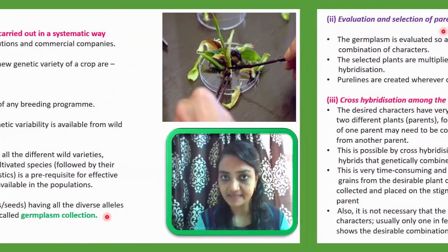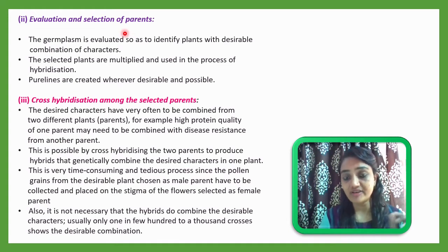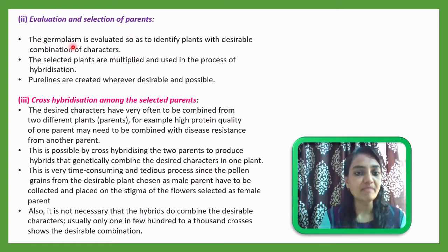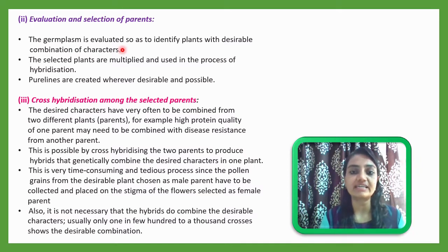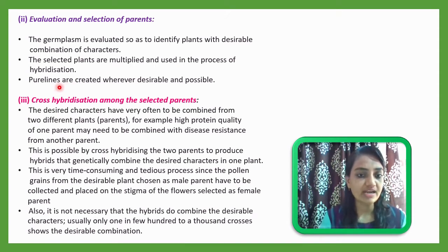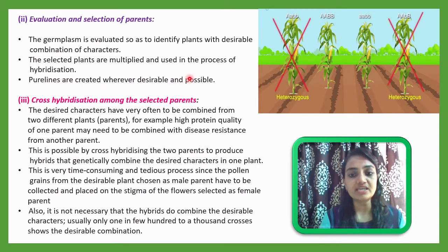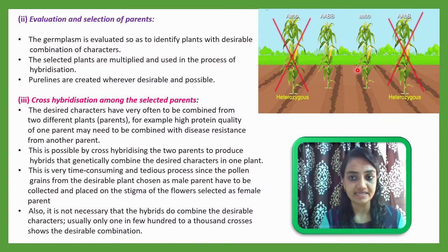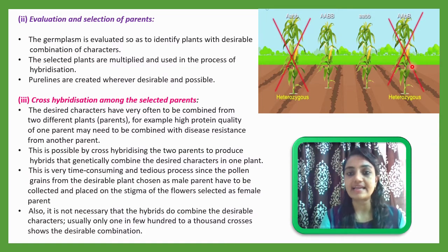The second step is evaluation and selection of parents. The germplasm is evaluated to identify plants with the desirable combination of characters. Selected plants are multiplied and used in the process of hybridization. Pure lines are created wherever desirable and possible. Out of the collected varieties, only homozygous pure lines are selected; heterozygous plants are avoided in this step.